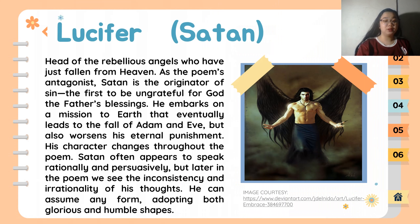As the last major character, we have Lucifer — head of the rebellious angels who have just fallen from heaven. As the poem's antagonist, Satan is the originator of sin, the first to be ungrateful for God the Father's blessings. He embarks on a mission to earth that eventually leads to the fall of Adam and Eve. His character changes throughout the poem. Satan often appears to speak rationally and persuasively, but later we see the inconsistency and irrationality of his thoughts. He can assume any form, adopting both glorious and humble shapes.